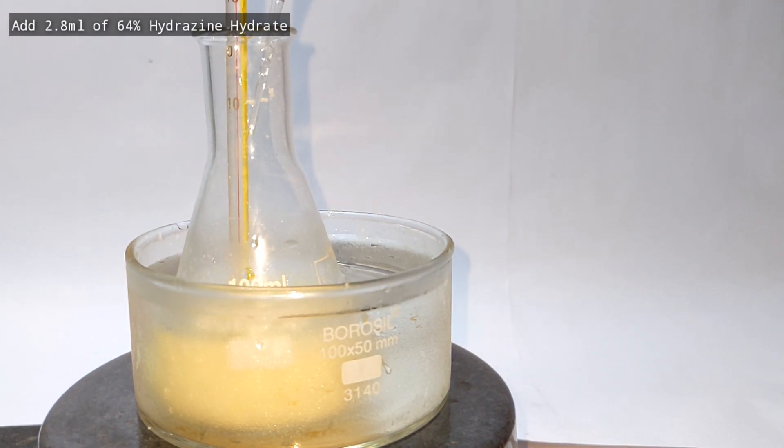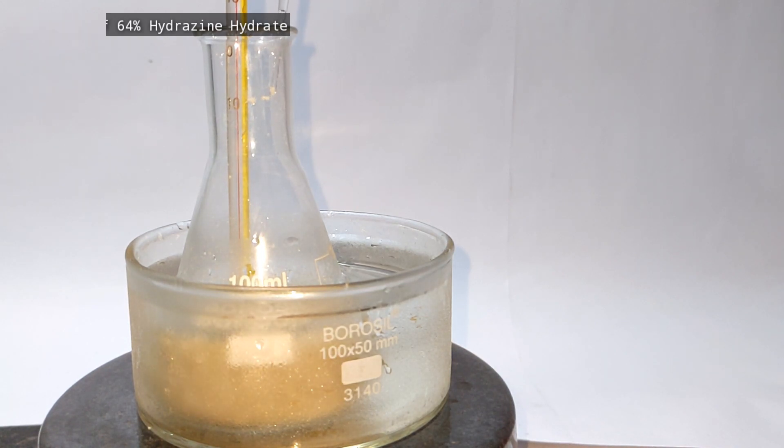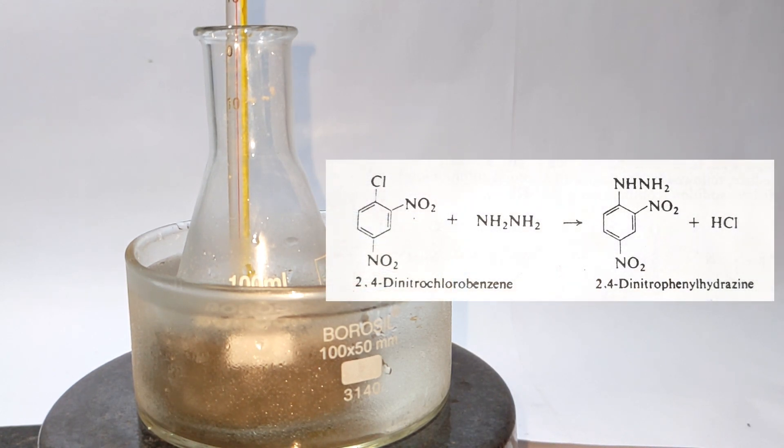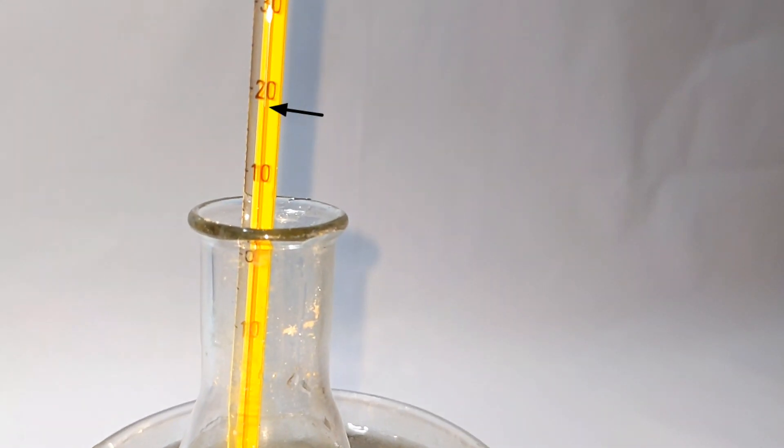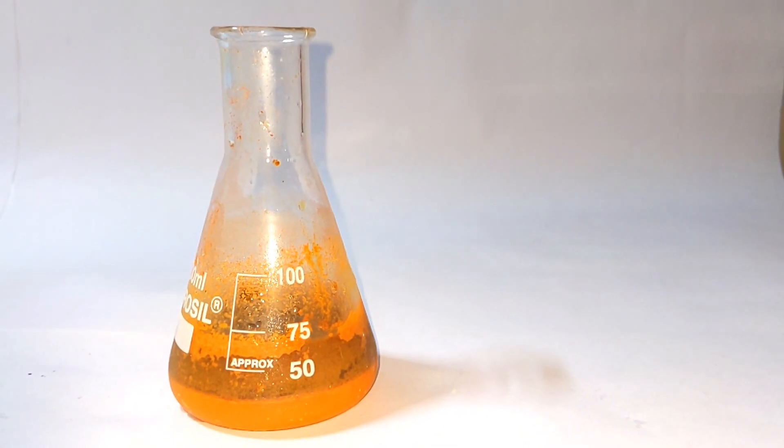Now add 2.8 milliliters of 64% hydrazine hydrate solution. It should be added slowly dropwise with a dropper as the reaction is exothermic. You immediately notice a change in color. What's happening here is the hydrazine hydrate reacts with 2,4-dinitrochlorobenzene to form 2,4-dinitrophenylhydrazine. Always monitor the temperature and make sure it is between 15 and 20 degrees Celsius during the complete addition.